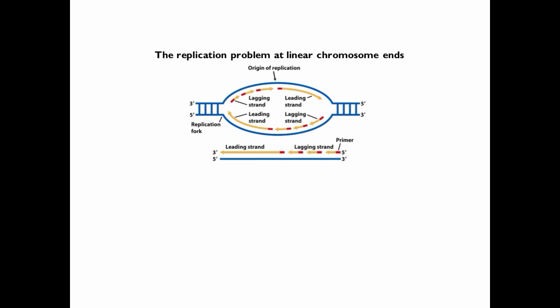Replication occurs bidirectionally from the origin of replication, leading to leading strand synthesis and lagging strand synthesis, where leading strand synthesis occurs continuously in the 5' to 3' direction, and lagging strand synthesis occurs discontinuously where short fragments of new DNA is synthesized in the 5' to 3' direction.